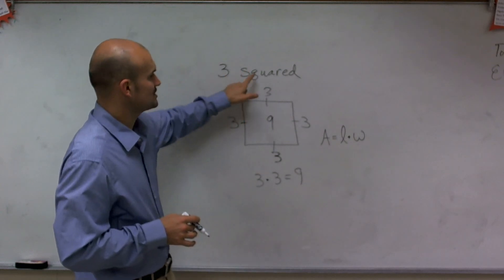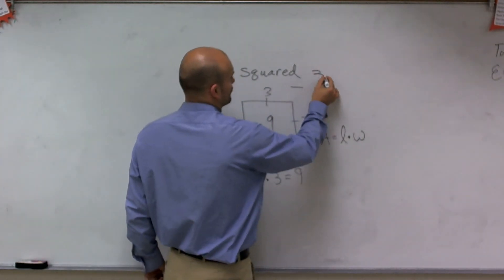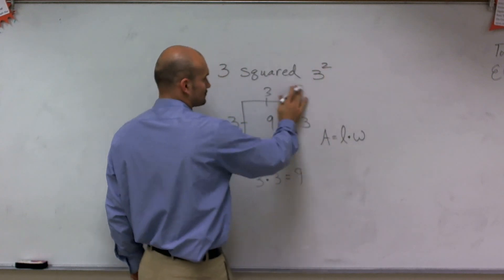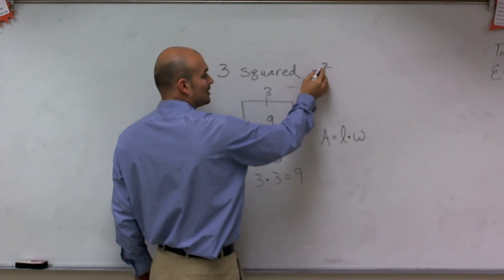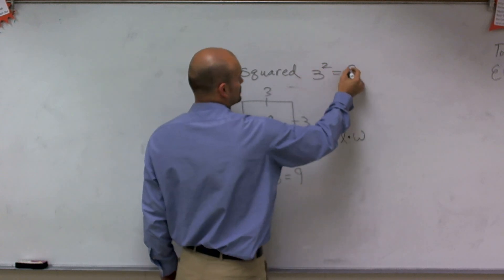So again, 3 squared, the way that we write it is 3 with a little 2 up at the top. So 3 squared equals 9.